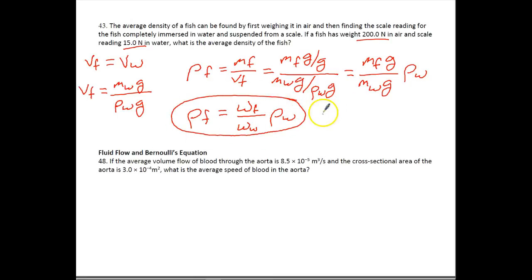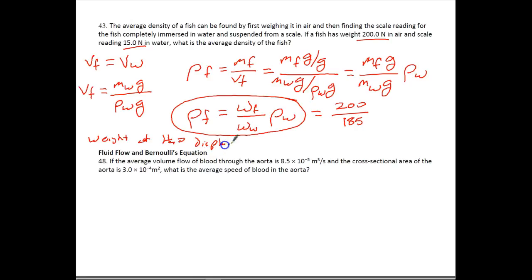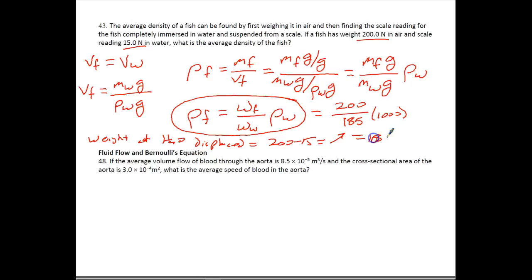Let's plug everything in. The weight of the fish in air is 200 newtons. On the bottom, we have 200 minus 15, which is 185 — that's the weight of the water that is displaced. So the equation is 200 over 185 times 1,000, which equals 1,080 kilograms per meter cubed. Be careful: the denominator is the weight of the water that is displaced, not just the scale reading.